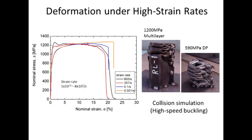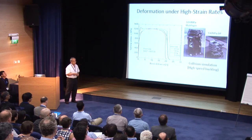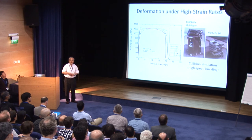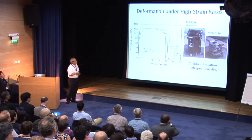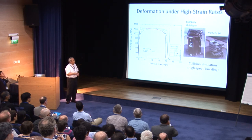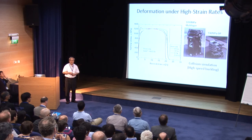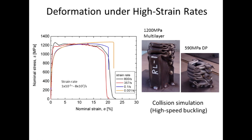These martensitic multi-layer steels maintain their elongation even under high strain rate deformation. Here are stress-strain curves at different strain rates, with the maximum at 800 per second. Yield strength increases with increasing strain rate, but elongation does not change much. The test results of high-speed buckling, simulating the collision of front-side members of automobiles, show that the 1200 MPa multi-layer steel deforms perfectly in the same way as 590 MPa dual-phase steel, with additional space for deformation due to its high strength. There is no delamination or local cracking during this high strain rate deformation.